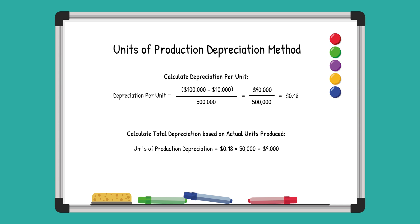For the 50,000 units produced in the first year, the depreciation expense is 50,000 times 18 cents, for a $9,000 depreciation expense. The remaining book value of the machine at the end of the first year will then be $100,000 minus $9,000, for a total of $91,000.